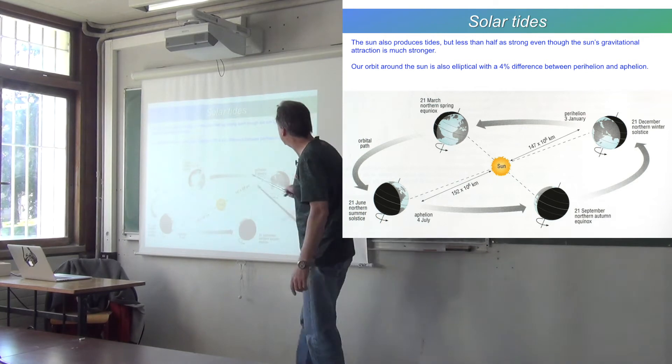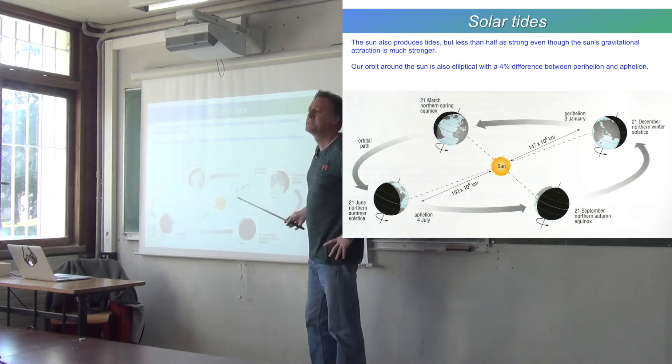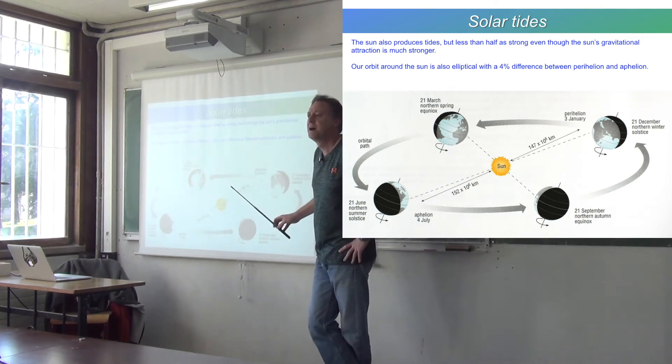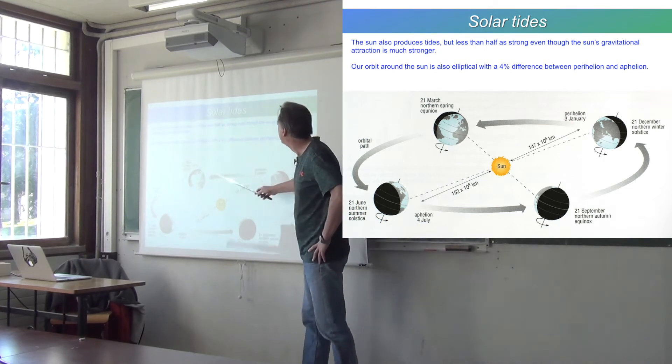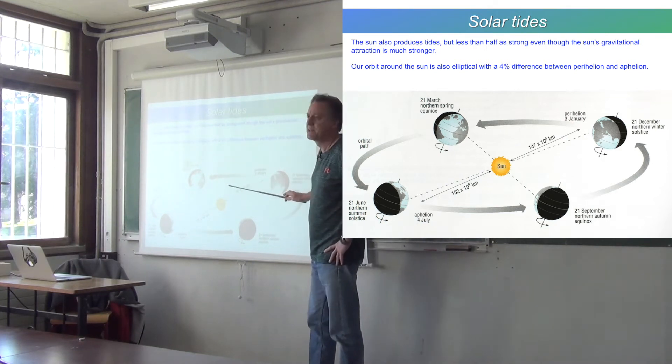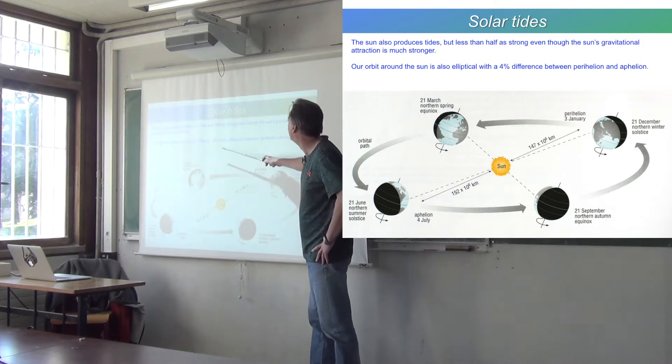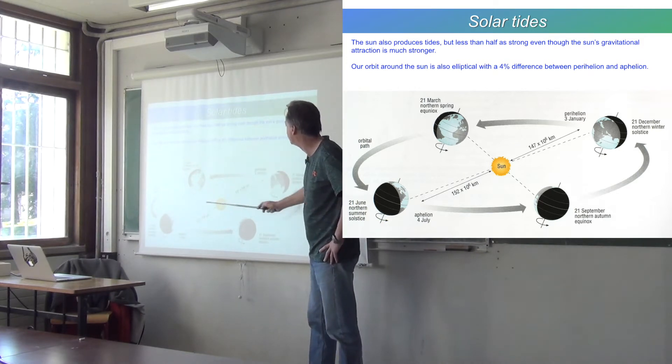So here's the Earth going around the Sun, and that orbit is not perfectly circular either. It's elliptical, but the eccentricity of that ellipse is somewhat smaller. It's only a 4% difference between the closest and the furthest away.